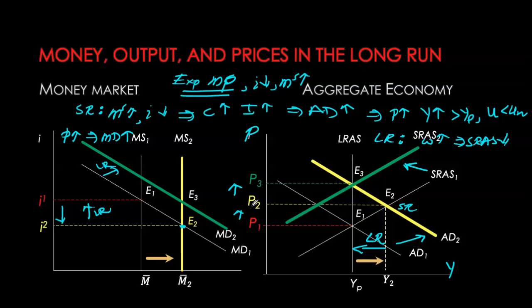This is what we call money neutrality — money is completely neutral in the long run. It does not create any real changes in the economy; it has no impact on permanent GDP, does not lower the natural rate of unemployment, and its only real impact is on the aggregate price level or inflation. However, this analysis is also very useful: the Bank of Canada can target any inflation rate in the long run.